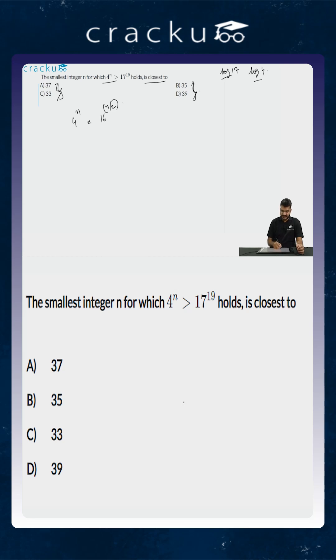Now you know that 16 to the power n by 2, if it is greater than 17 to the power 19 as is given, because 16 is less than 17, it would definitely imply that n by 2 is greater than 19. Because 16 is the smaller number, if it is raised to a much higher number, only then will it be greater than 17 to the power 19. Or this would imply that n is greater than 38.